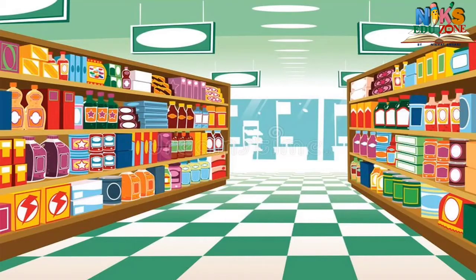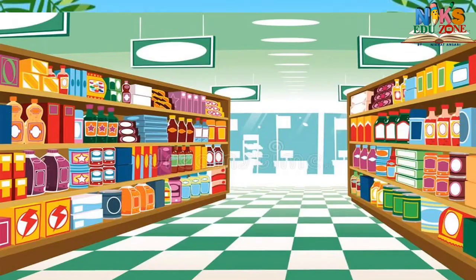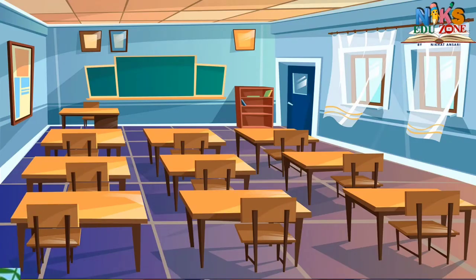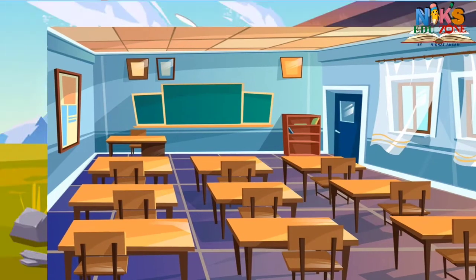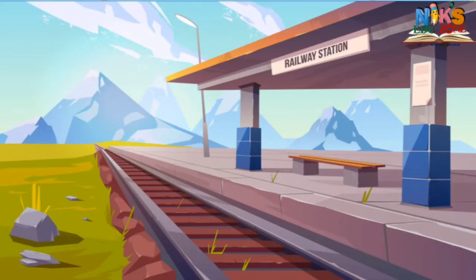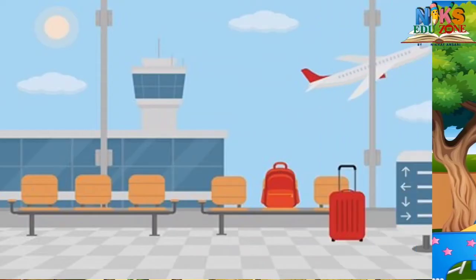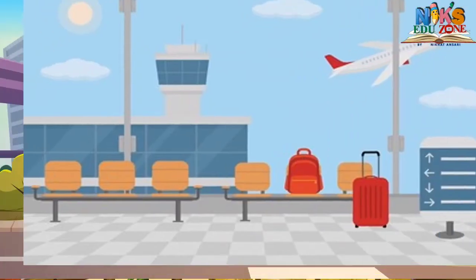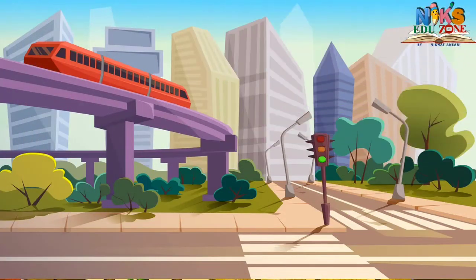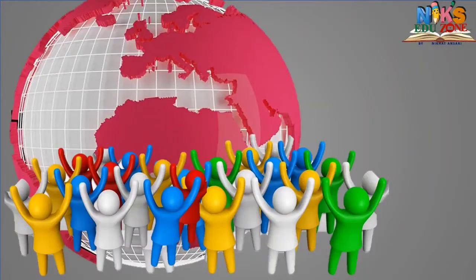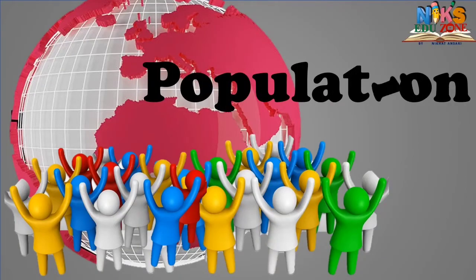Hello dear students, look at these pictures of some places. Despite its beauty, this place seems incomplete — something is missing. No human is visible in these pictures. This world is beautiful only because of human beings. A group of human beings living in a region is called a population. Today we are going to learn a very important geography chapter: population.